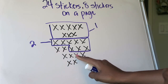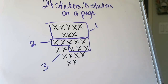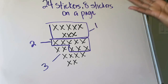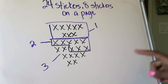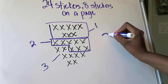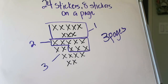I count out one more set of eight and that is my third group. So the groups represent the number of pages that I need. Looking at my model, if I have 24 stickers and I want eight stickers on a page, how many pieces of paper do I need? The answer is I would need three pieces of paper.